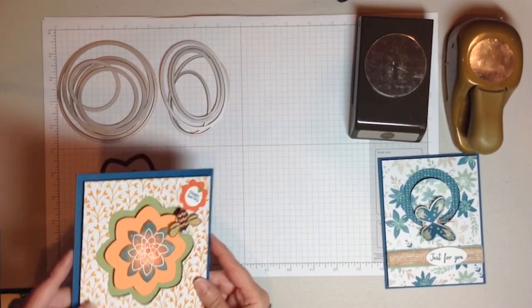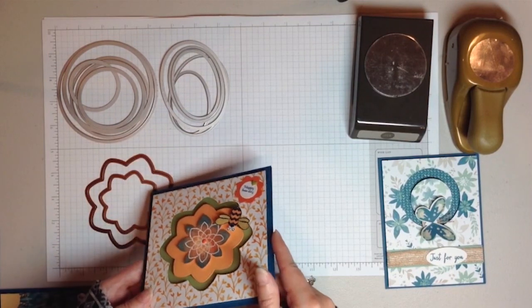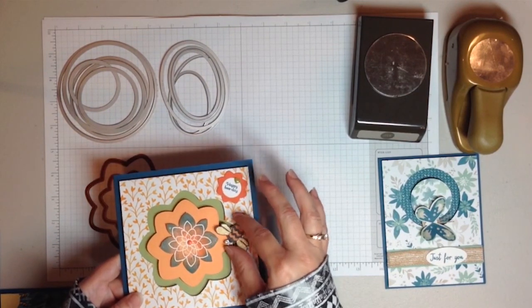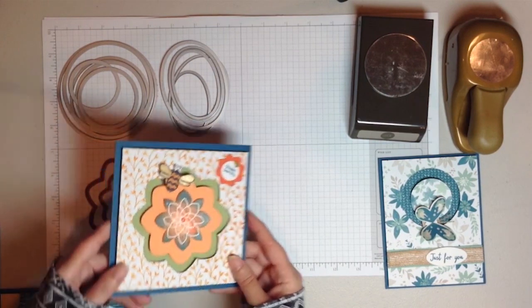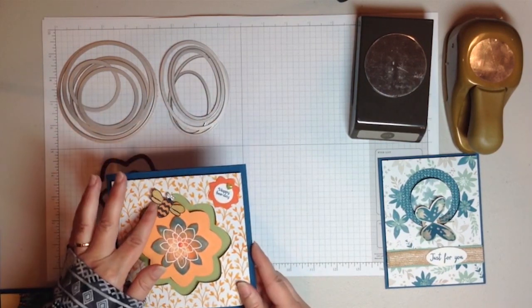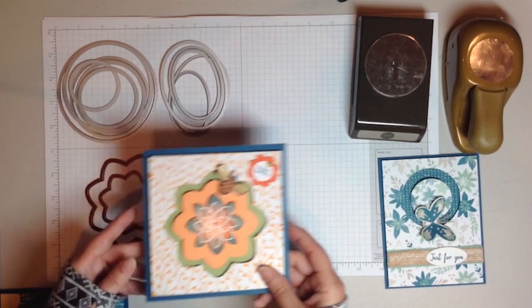You can see that for this card, it does spin, but it's more like a maze that the little bee will go in and out of. You can move it back and forth. It does spin a little bit, but obviously you're not going to get as nice of a spin on a shape like a flower.